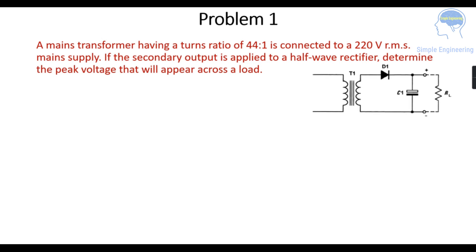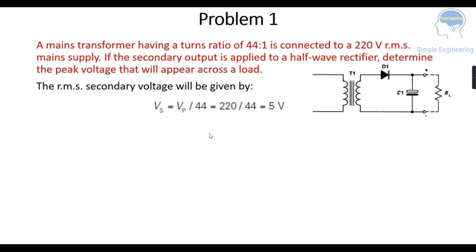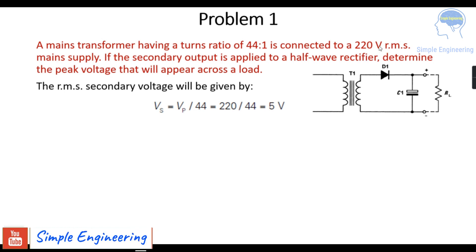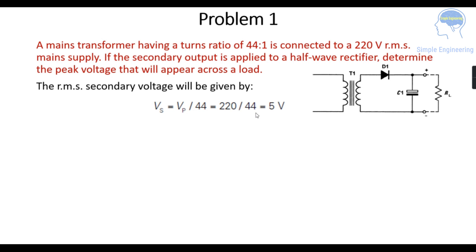This is your half-wave rectifier. You will be having a diode, a transformer, a capacitive filter, and this is your load resistance RL. From the mains supply 220 volt is given and you have to find the RMS secondary voltage. That is denoted as Vs, which is equal to Vp divided by 44 because your turns ratio is 44 to 1. So 220 divided by 44 gives 5 volt as your secondary voltage.